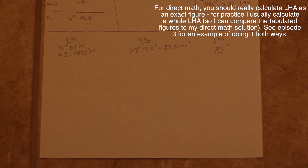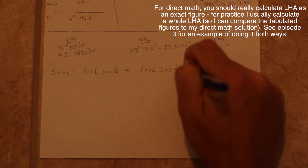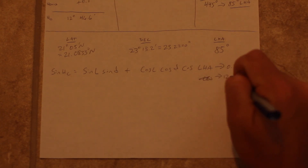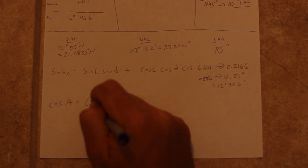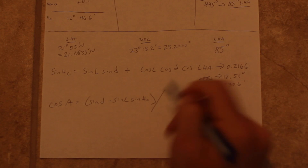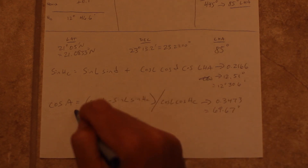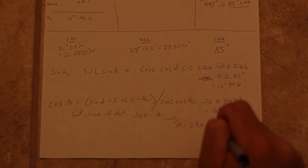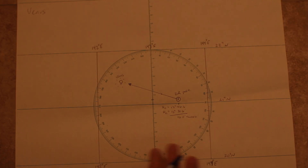Let's do our calculations manually for this example. We'll note the latitude, declination, and LHA, and then convert them to decimal figures. We'll write down the formula, and doing the math with a programmable calculator, we come up with a figure of decimal 0.2166. We convert that to degrees by taking the arcsine, then move on to the azimuth formula. This time we come up with a figure of decimal 0.3473. We take the arc cosine and come up with our azimuth figure. However, we need to apply our correction because the GP is west of the AP, and we get our true azimuth of 290.3 degrees. Once we've got our figures, we'll note the difference between the computed height and the observed height, and then head over to our plotting sheet to lay down our line of position.